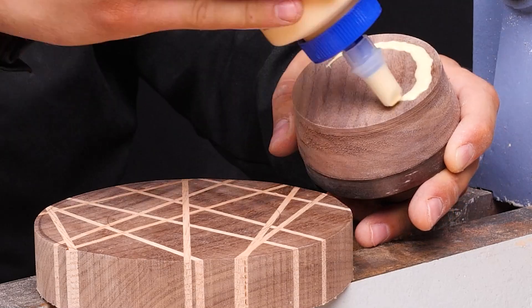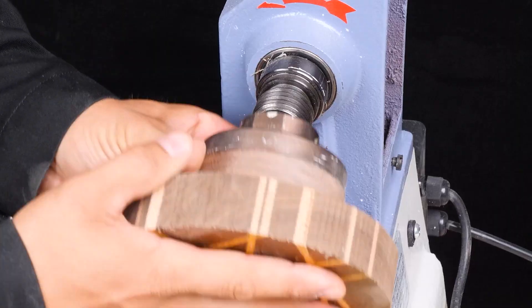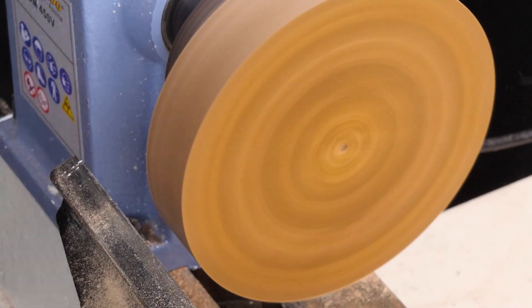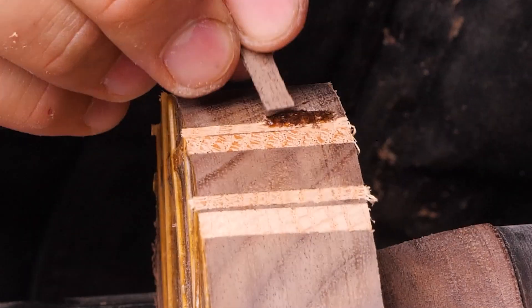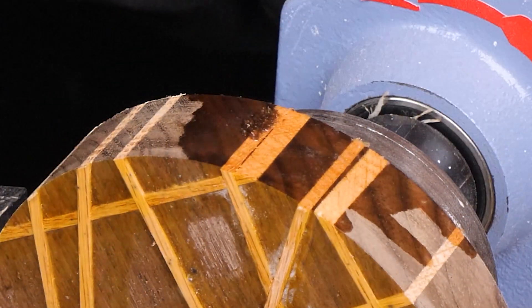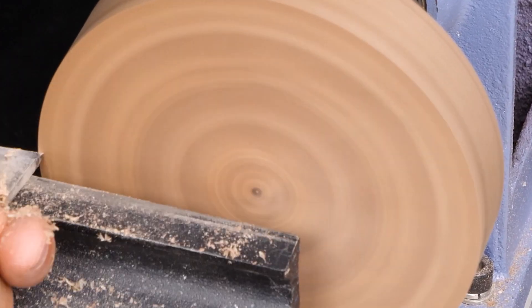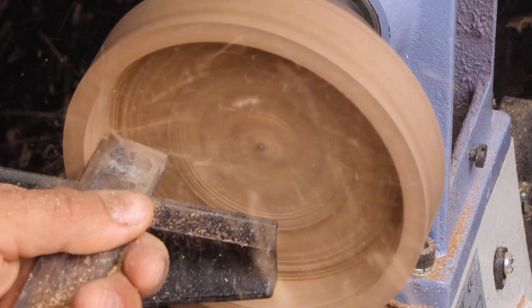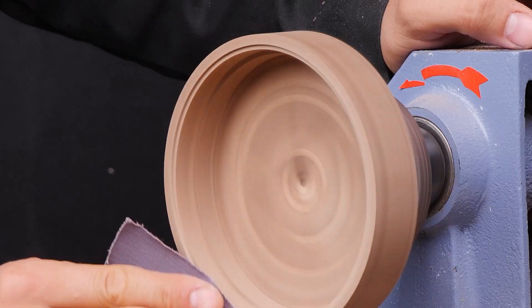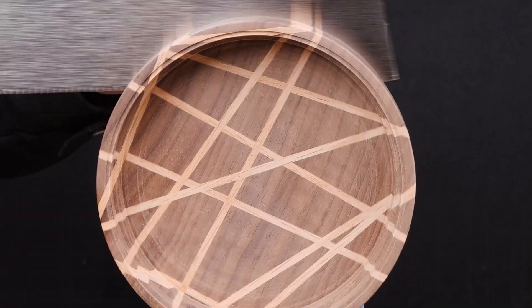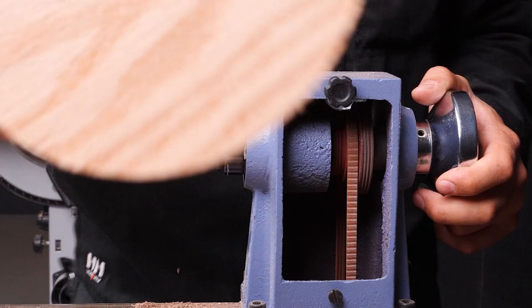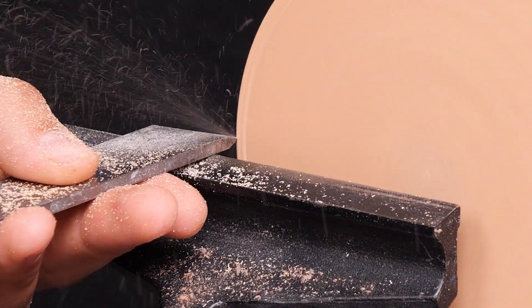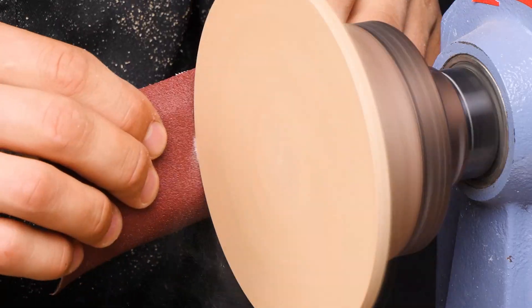Moving on, we need to create a hollow space in the round board. Enter the wood lathe machine, a brilliant tool that will help us achieve the perfect shape. We're getting closer to unveiling the levitating pot. Almost there folks.